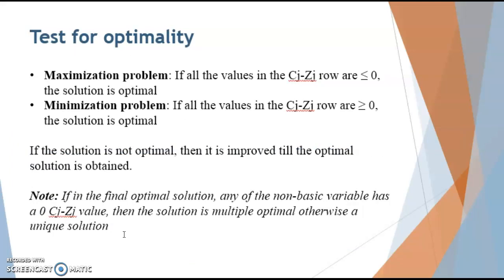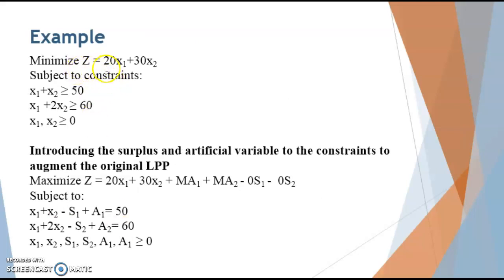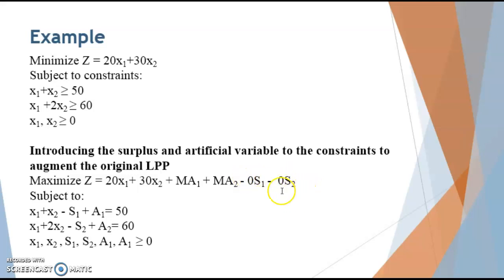Now we will move to the question. Suppose you have to minimize the objective function subject to the given constraints. Since these are greater-than-or-equal-to type constraints, we have to subtract the surplus variable and add the artificial variable to augment our equations. So for the first equation: minus s1 plus a1, and for the next: minus s2 plus a2. We also add capital M as the coefficient of the artificial variables and subtract 0 as the coefficient of the surplus variables in the objective function.